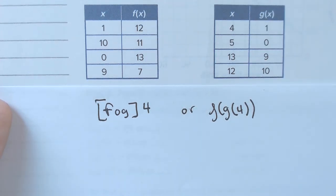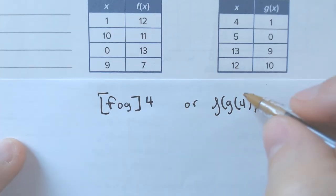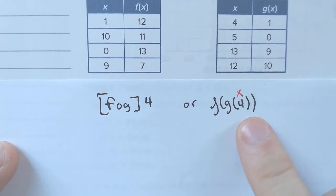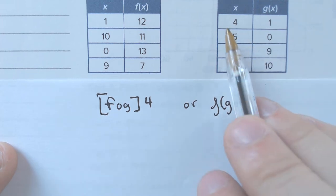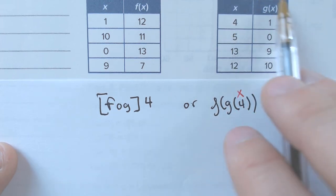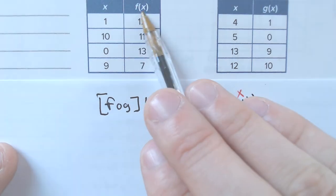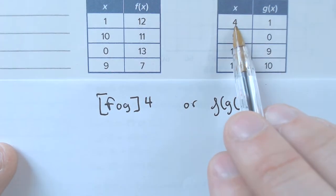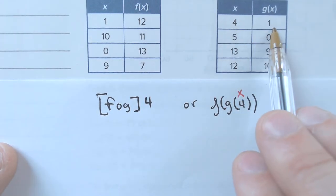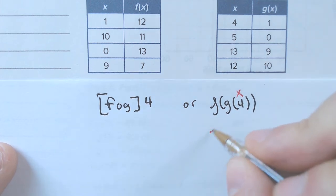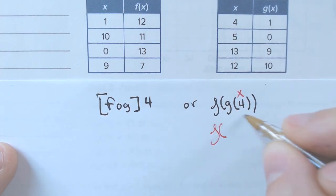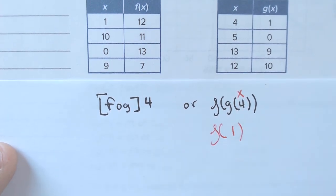So, remember that this is the x value. So, we need to plug in 4 for x into g. Well, if I plug in 4 into the g function, they are labeled, see the tables, this is f of x, this is g of x. If I plug in 4 for x, I get 1 as an output, which means g of 4 is 1.